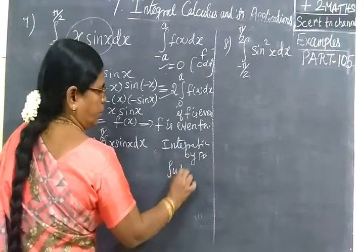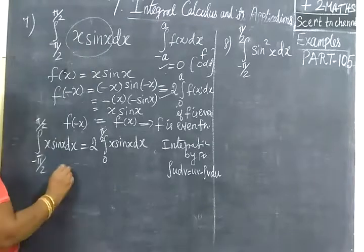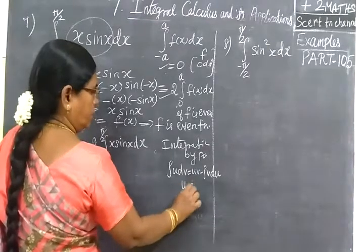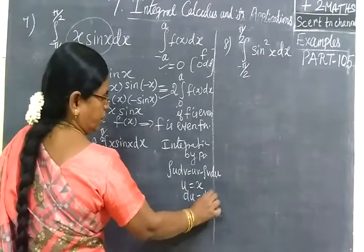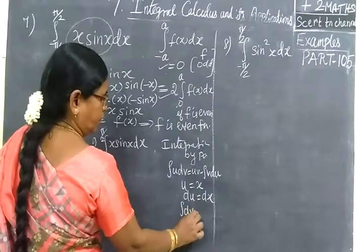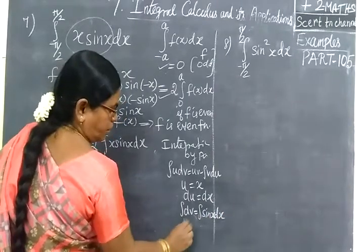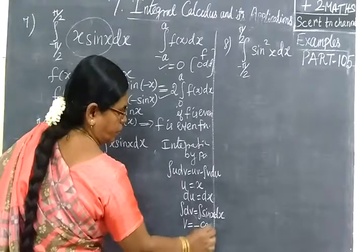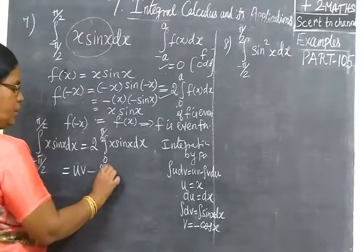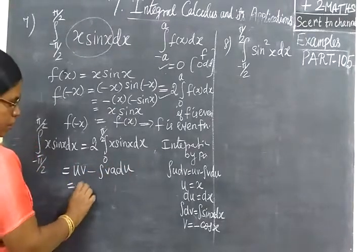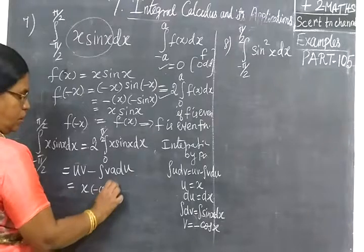The integration by parts formula is: integral of u·dv equals u·v minus integral of v·du. Here u equals x, so du equals dx. Then dv equals sin(x) dx, and integrating gives v equals minus cos(x).